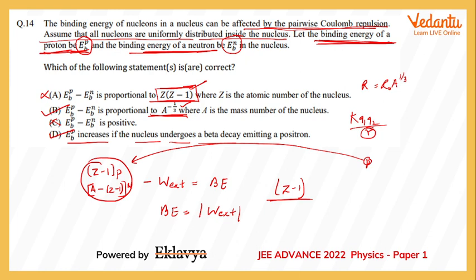So the correct answer to this question would be B and D. I would say this was a good question — a calculation-less but logical thought question. I am very confident that IIT will probably give the answer as ABD, but I would go with options B and D. You may agree with me or disagree with me, but I will voice my opinion. Thank you for watching. Take care.